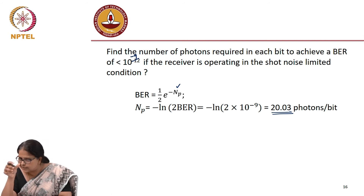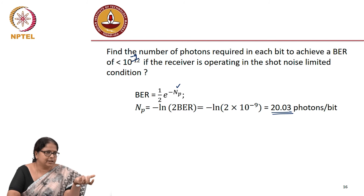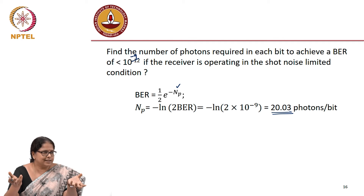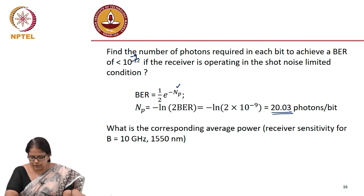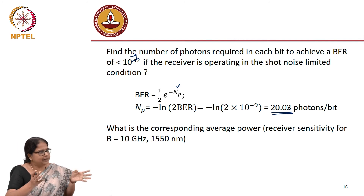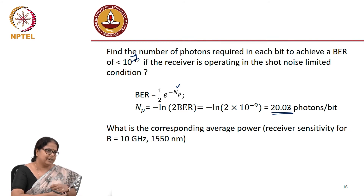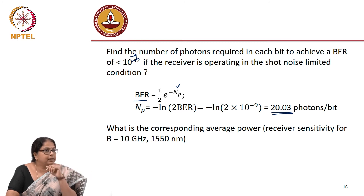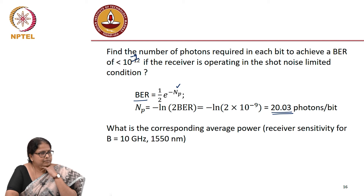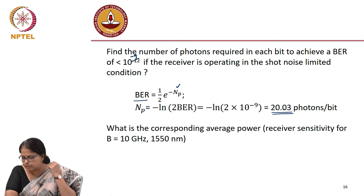This is the number of photons required. Look at the benefit of operating in the shot noise limited condition: to get a BER of 10^(-9), you need only 20 photons per bit. Notably, this is independent of bit rate — a very significant difference from thermal noise limited operation, where bandwidth always enters. Here, BER depends only on photon number, regardless of whether you operate at 10, 20, or 30 gigabaud. The corresponding average power to achieve BER of 10^(-9) is what we call receiver sensitivity.